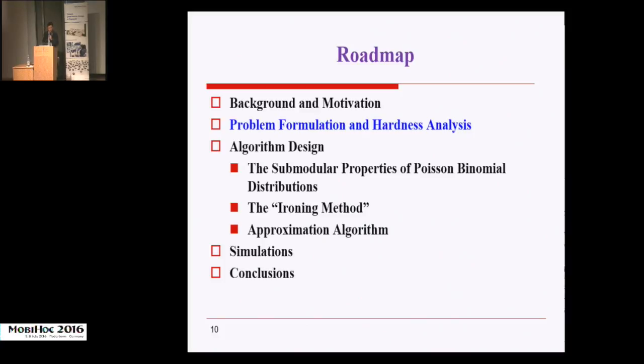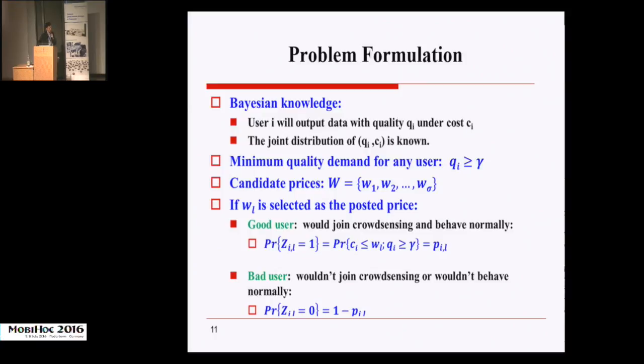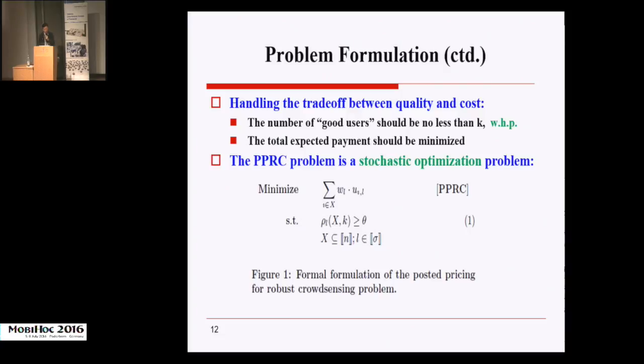Now I will introduce the formal formulation of the problem. We assume that the joint distribution of the user's quality and cost, denoted as (Q,C), are known beforehand. The task owner has a minimum quality demand gamma for each user and has to select the right posted price from the set W of candidate prices. When any price w_l is selected as the posted price, then users will be classified into two groups: the good users and the bad users. A good user would join crowdsensing and behave normally, while a bad user would not join or would not behave normally. We set pr_l to denote the probability that a user i would be a good user under price w_l, and hence the probability he or she to be a bad user is 1 minus pr_l.